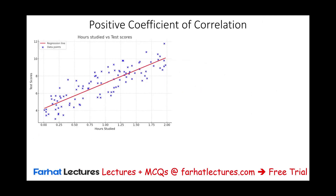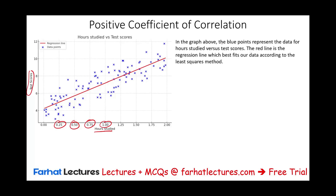The best way to illustrate this is to look at an output. We are going to graph hours studied — by increments of 0.25 of an hour (15 minutes, 30 minutes, 45 minutes, one hour) — against test scores, and graph them. In the graph, the blue points represent the data for hours studied versus test scores. The red line is the regression line, which best fits our data according to the least squares method — right in the middle of all these points.